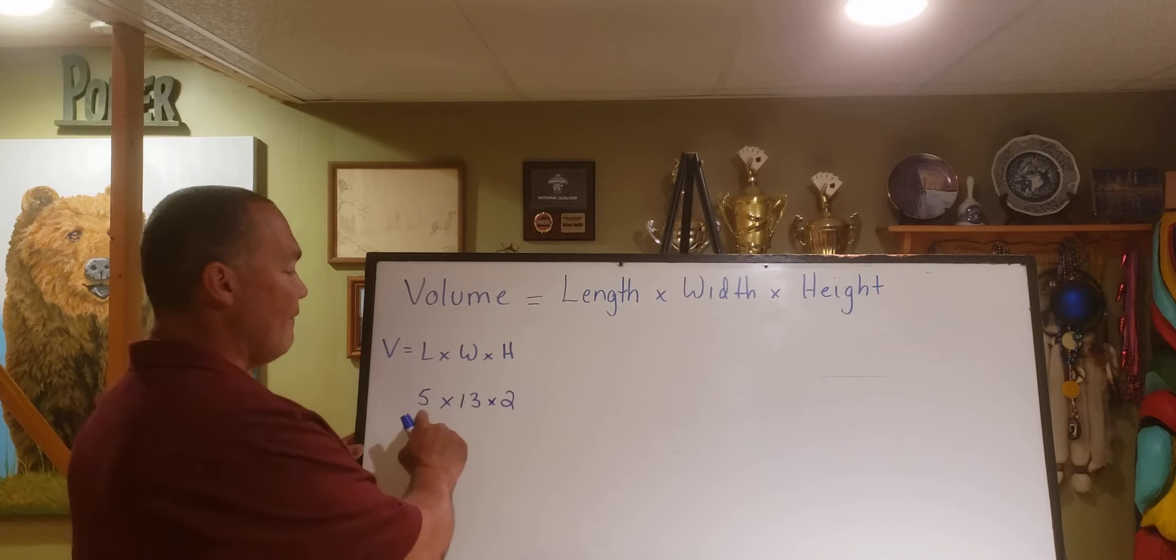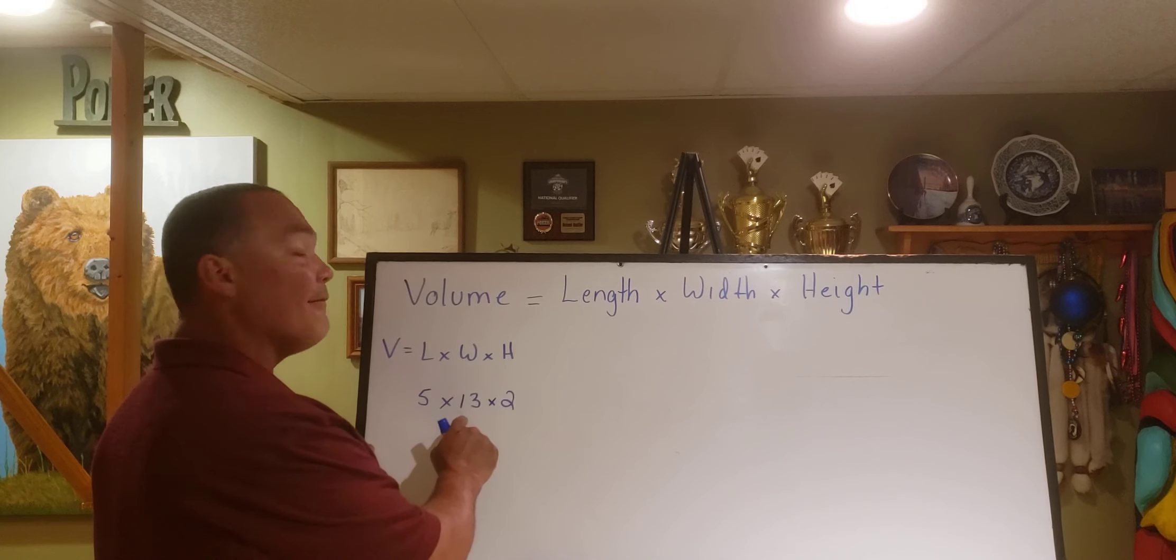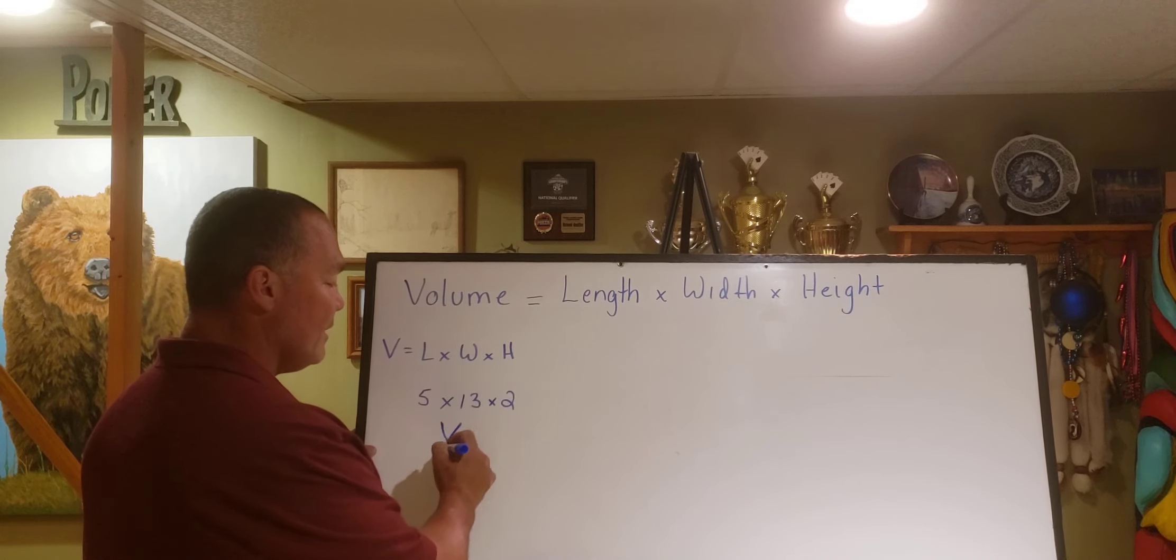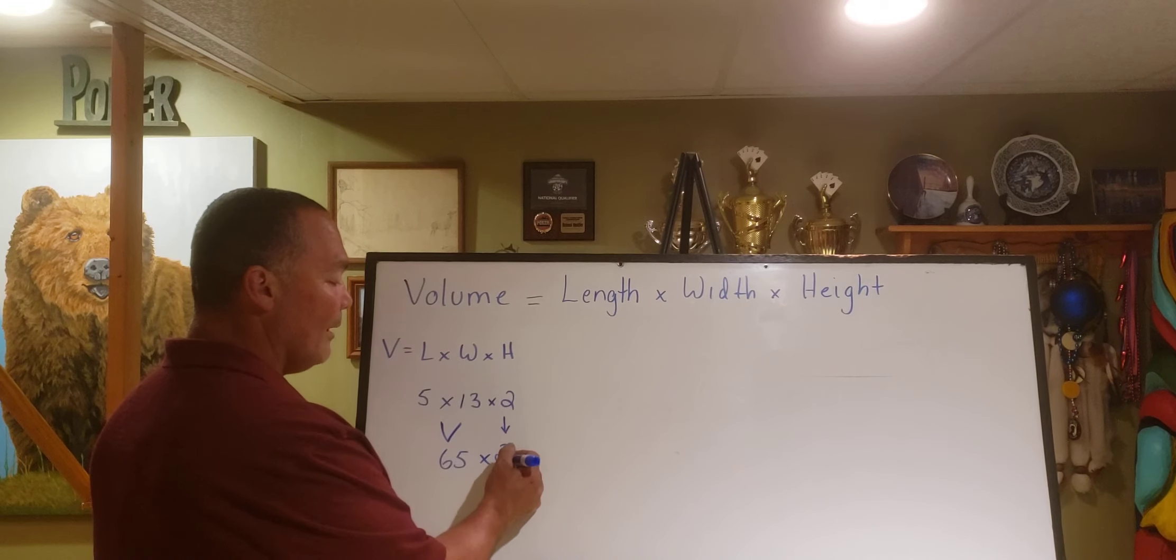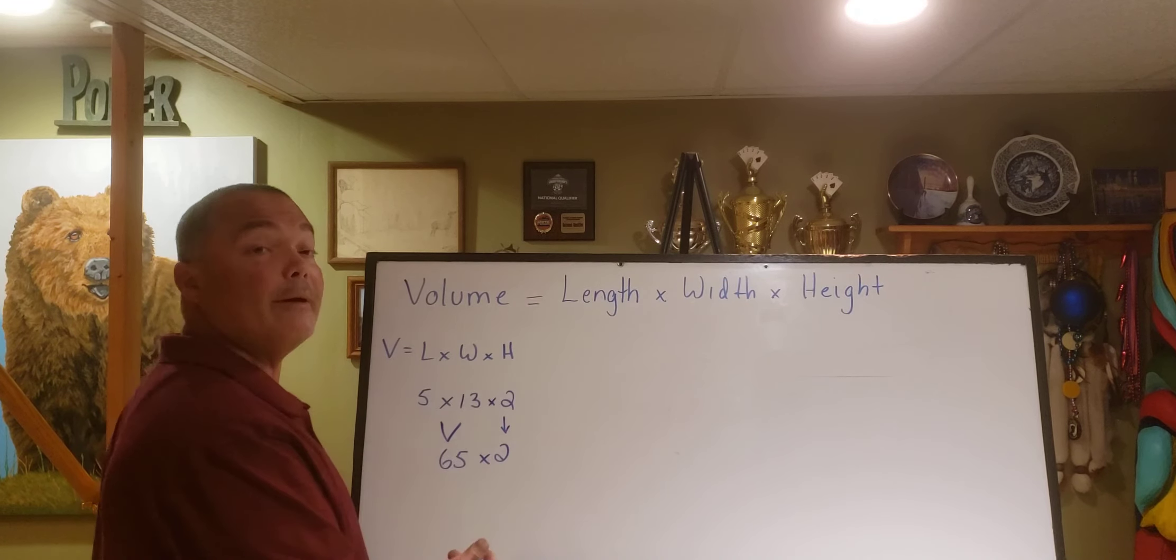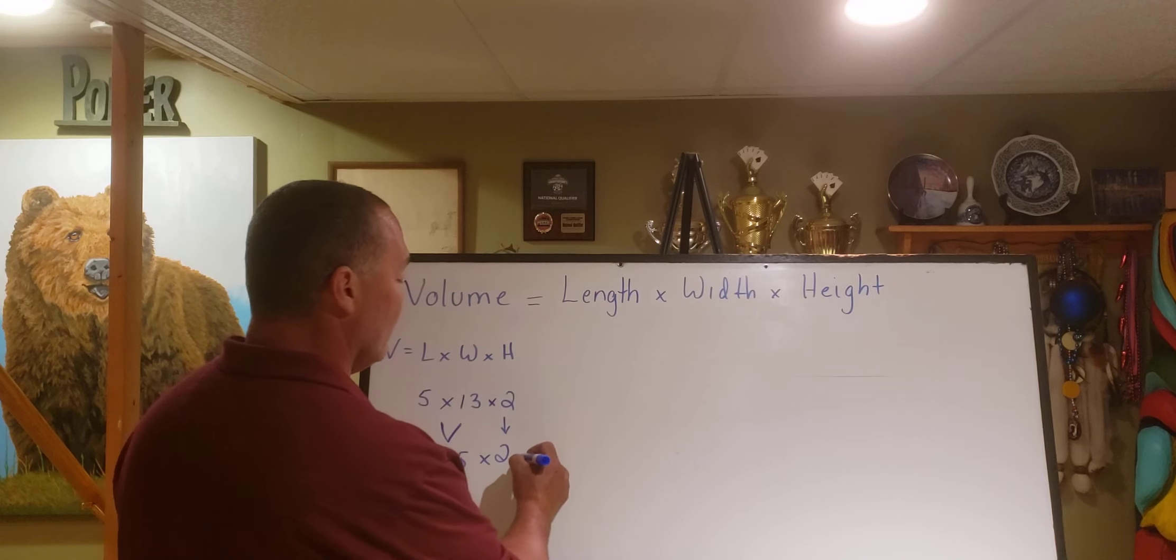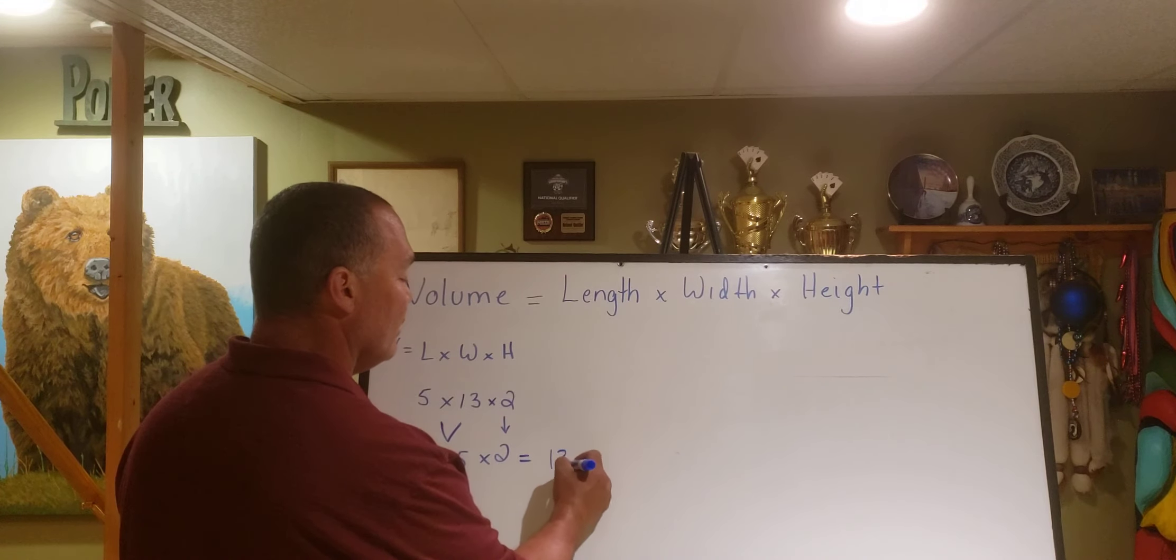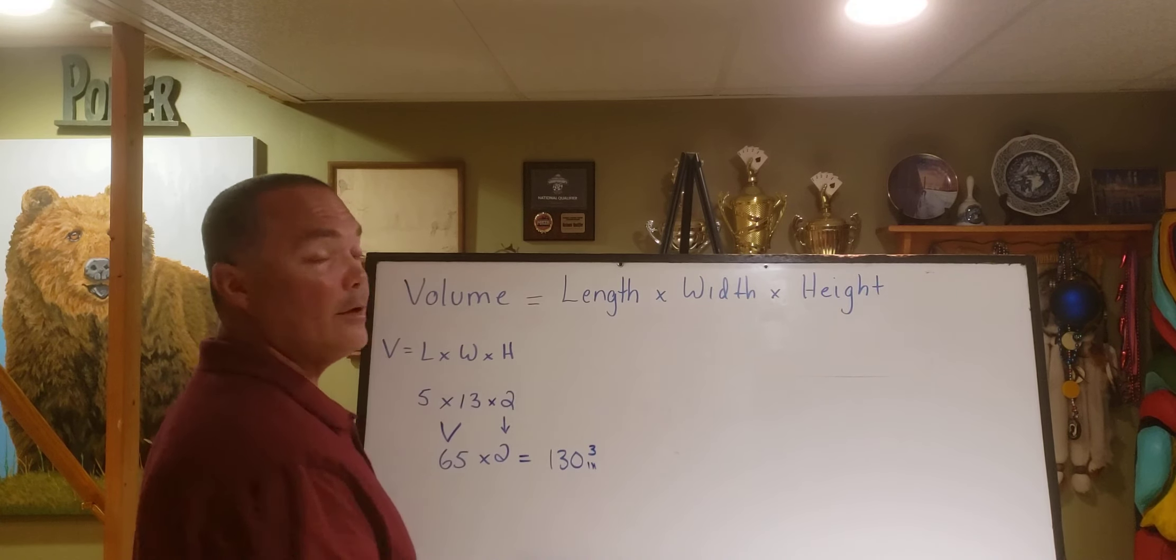I know that five times thirteen is sixty-five. Ten times five is fifty. Five times three is fifteen. Fifteen plus fifty is sixty-five. Bring down my two. Sixty-five times two. Well I know that sixty times two is one twenty, plus ten more is one thirty. So that's going to equal one hundred thirty cubic inches, right? One hundred thirty inches cubed.